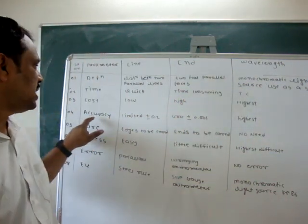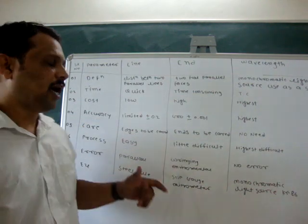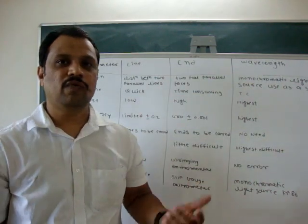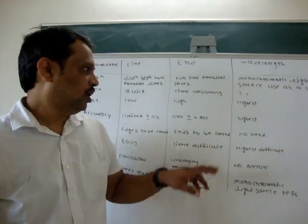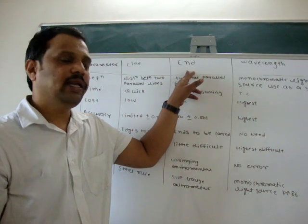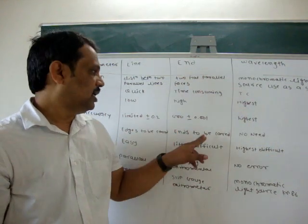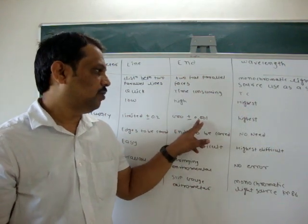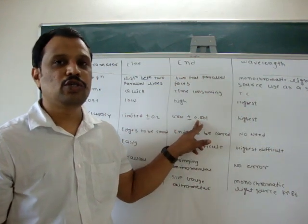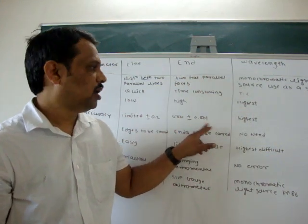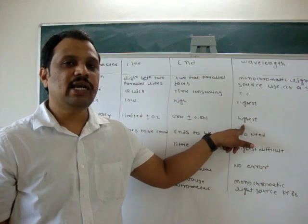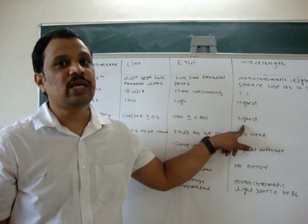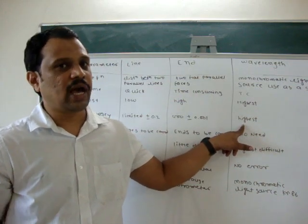Next point is accuracy. Accuracy of line standard is plus or minus 0.2. For end standard it is 0.001. And in wavelength standard, its accuracy is the highest.